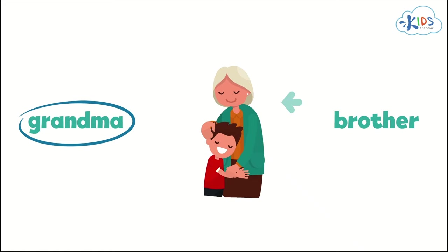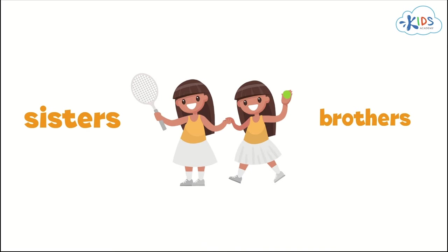Next, we see two girls playing tennis. They look like twins. Do you think that they are sisters or brothers? They are sisters, of course. Remember that a sister is a girl.